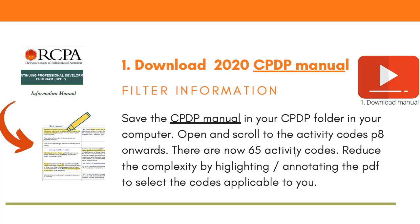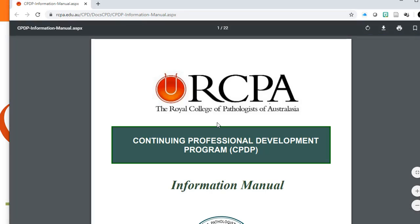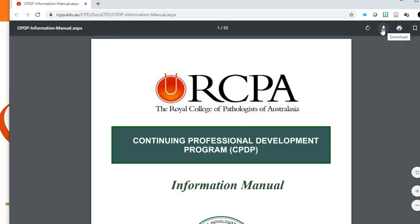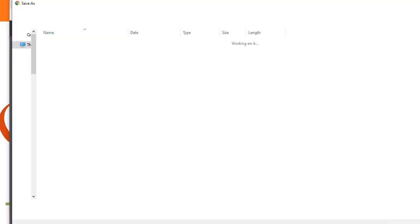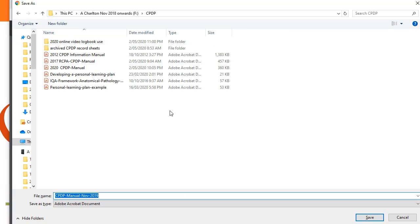I recommend starting with downloading the new CPDP manual. This is different from last year's because it contains the new activity codes for category C and D. You can click the link in the infographic to take you directly to the PDF on the RCPA website. Download it and store it in your computer in your CPDP folder.